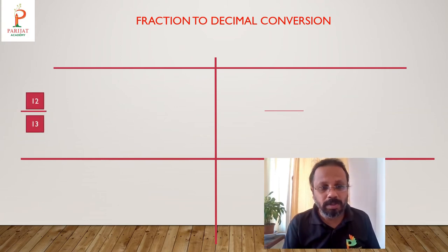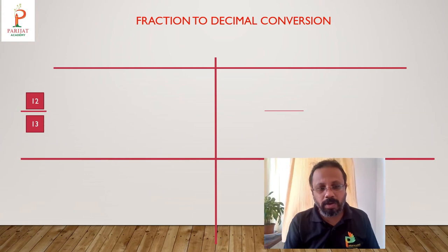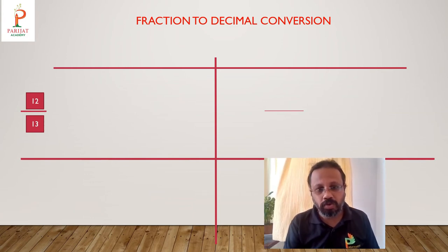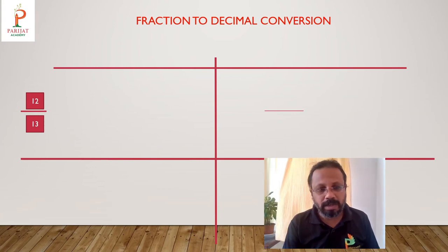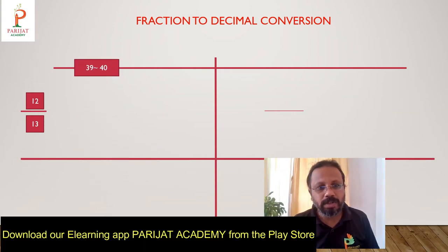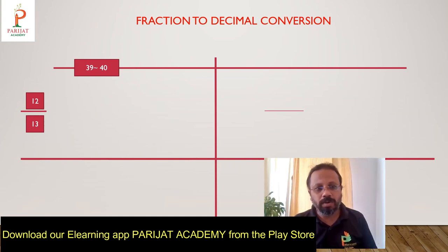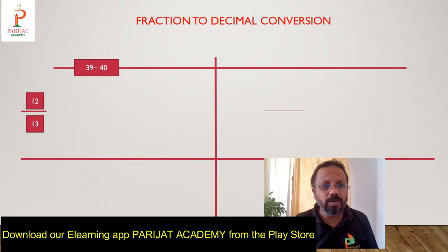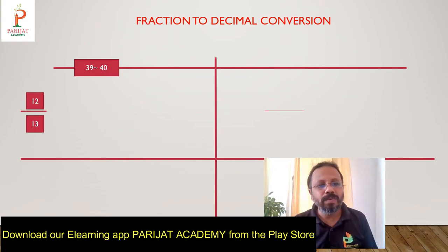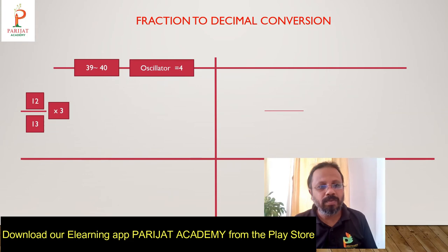Next: 12 upon 13. To find the osculator for 13, we note that 13 threes are 39, and 39 is nearly equal to 40, so the osculator is 4. The osculator for 13 is also 4, which we use as the denominator going forward.